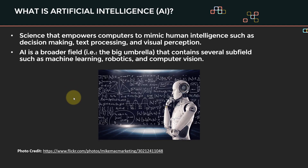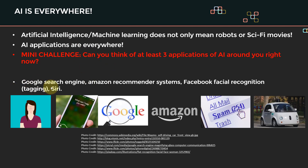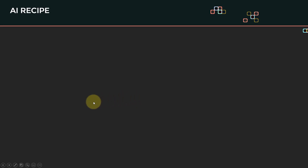We learned that AI is the science that empowers computers to mimic human intelligence. We also covered a quick mini challenge where we discussed several applications of AI around us right now. So what is the recipe to build an AI? In order to build any AI model, we need three elements.